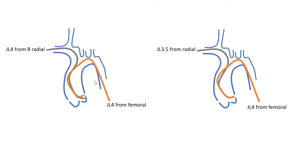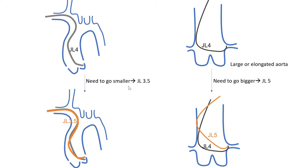This is a slide you need to memorize very well. I show this all the time in the cath lab — I show the fellow a catheter and ask what's the next step. You should always remember: elongated and pointing down, you get a shorter catheter, JL3.5 in this case. If it is falling with the tip pointing up, you get a longer catheter, JL5.